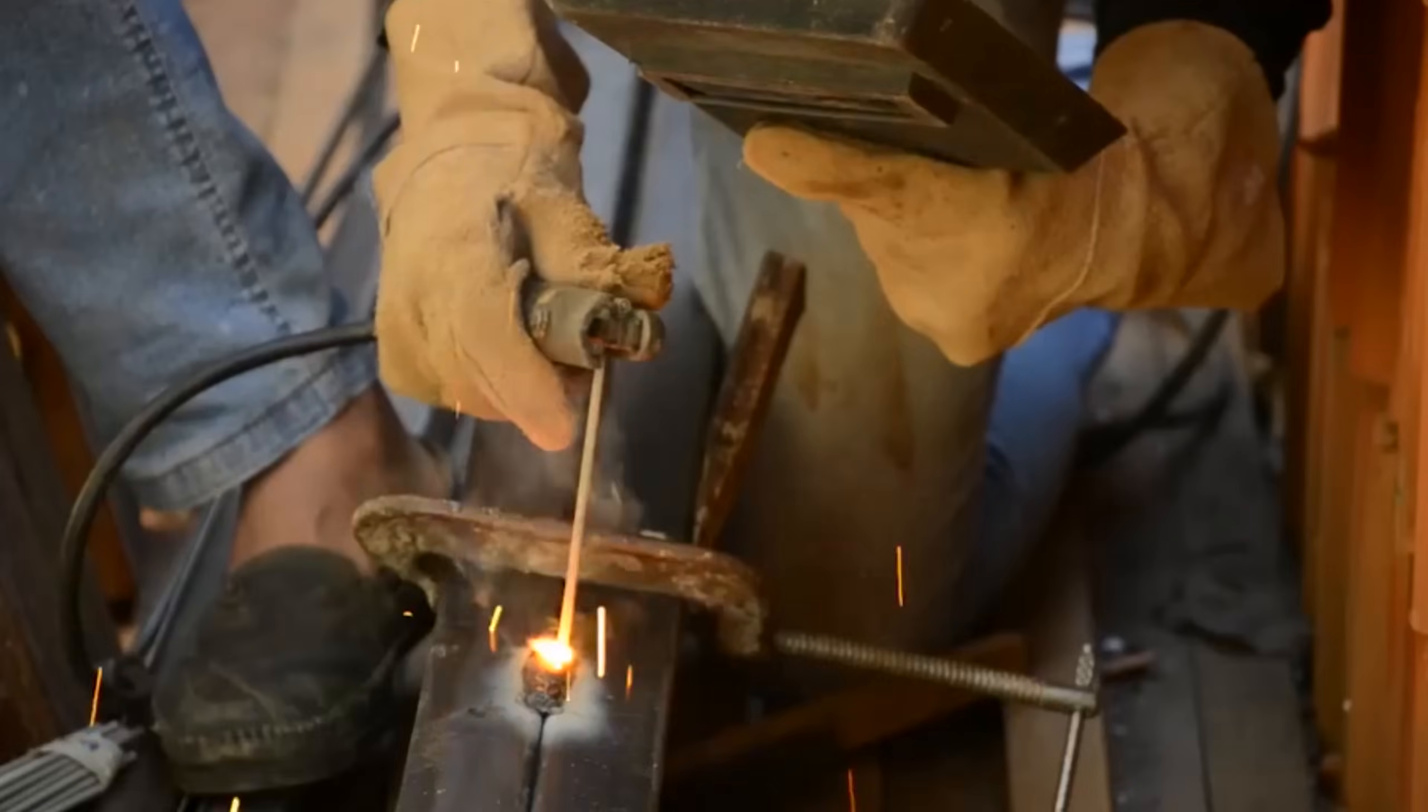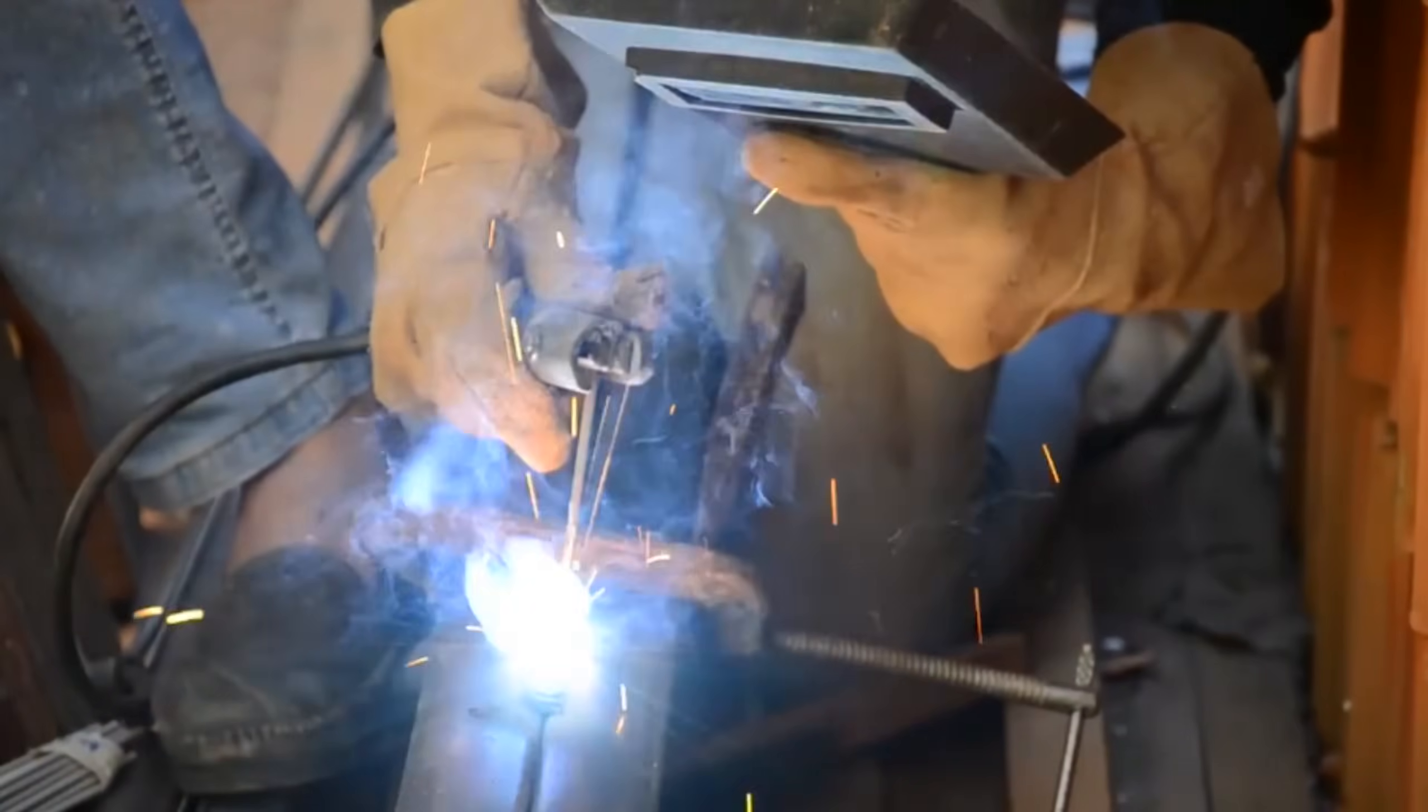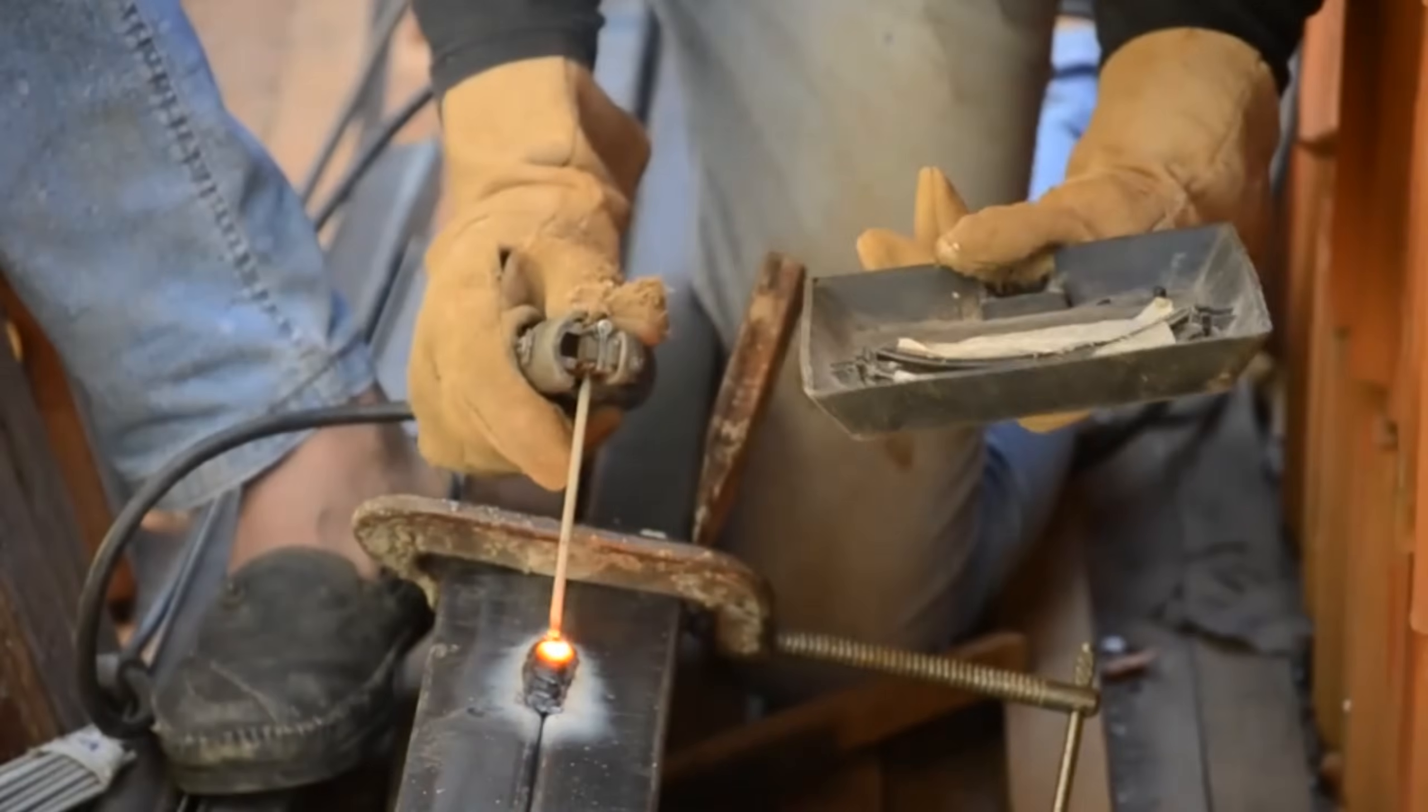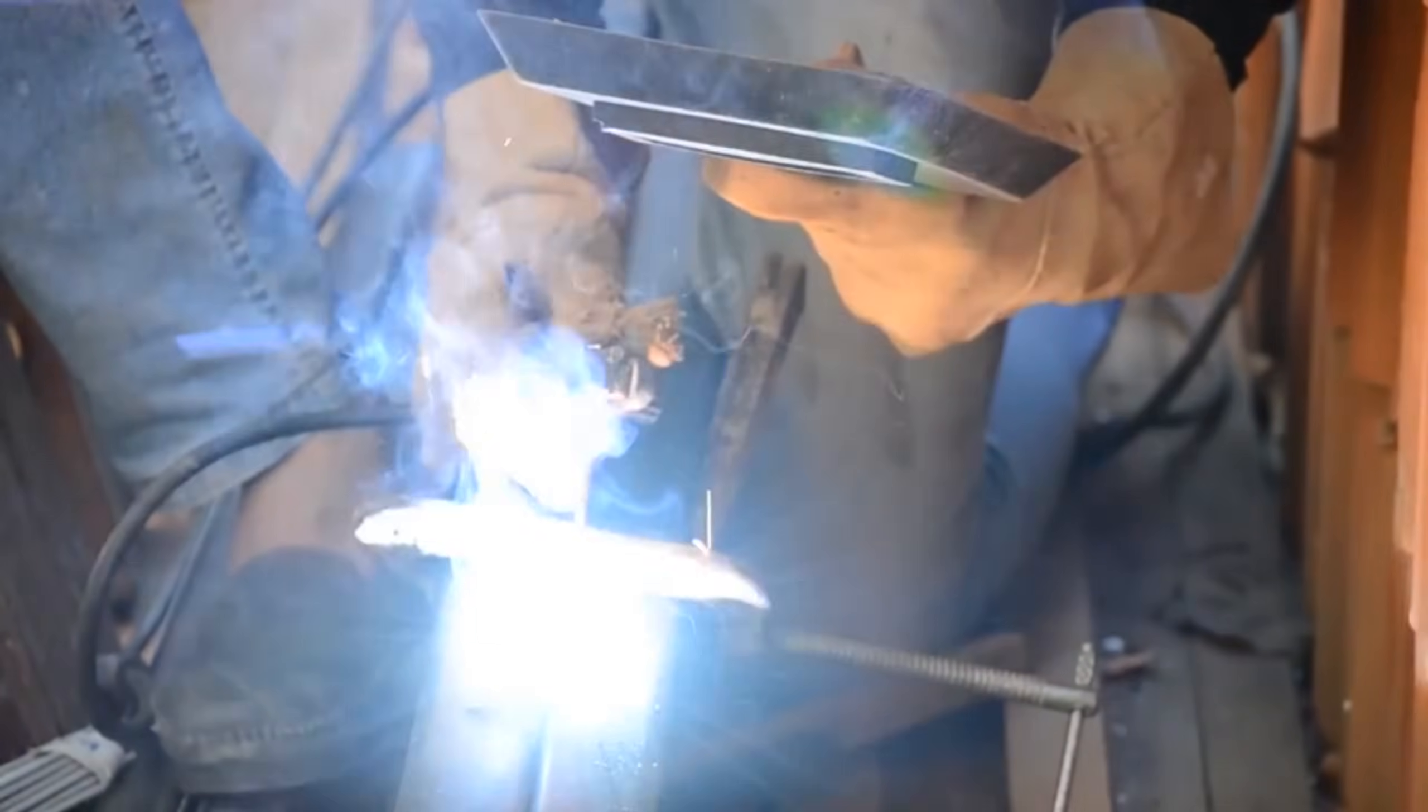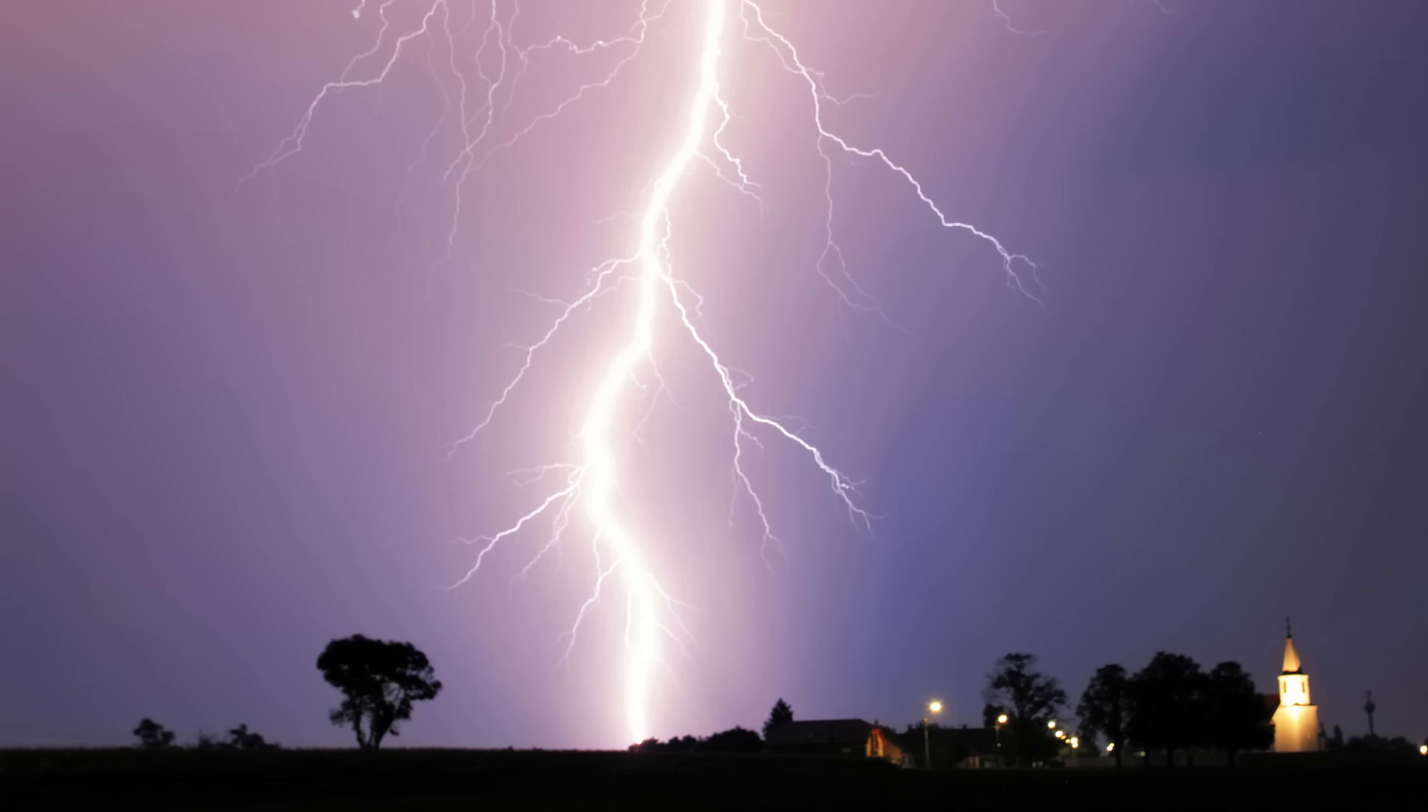For example, arc welders that use a plasma generated between two electrodes can get around 20,000 degrees Celsius. Very hot. Another example of extremely hot plasma is lightning. But today my goal is to create a plasma that's actually cold.